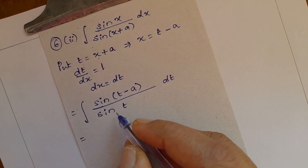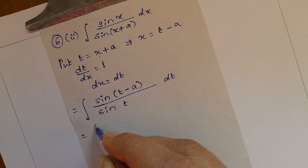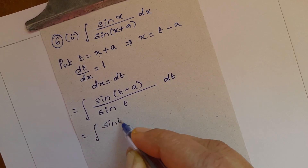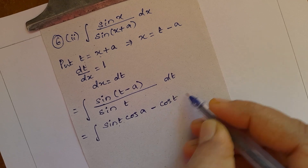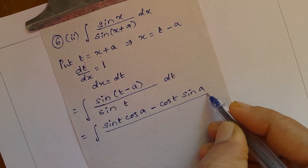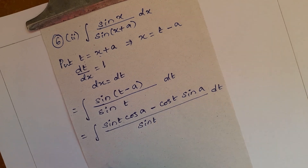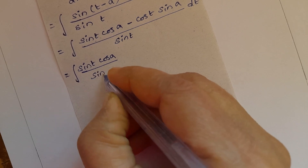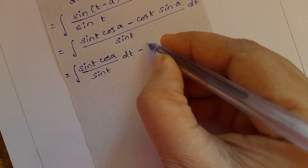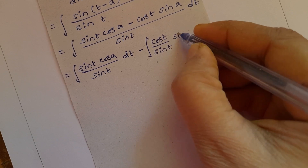Using the trigonometric formula for sin(A minus B): sin A cos B minus cos A sin B. So we get the integral of sin(t minus a) expanded as sin t cos a minus cos t sin a, all divided by sin t, into dt. Splitting into two parts: integral of sin t cos a divided by sin t dt, minus integral of cos t divided by sin t times sin a dt.